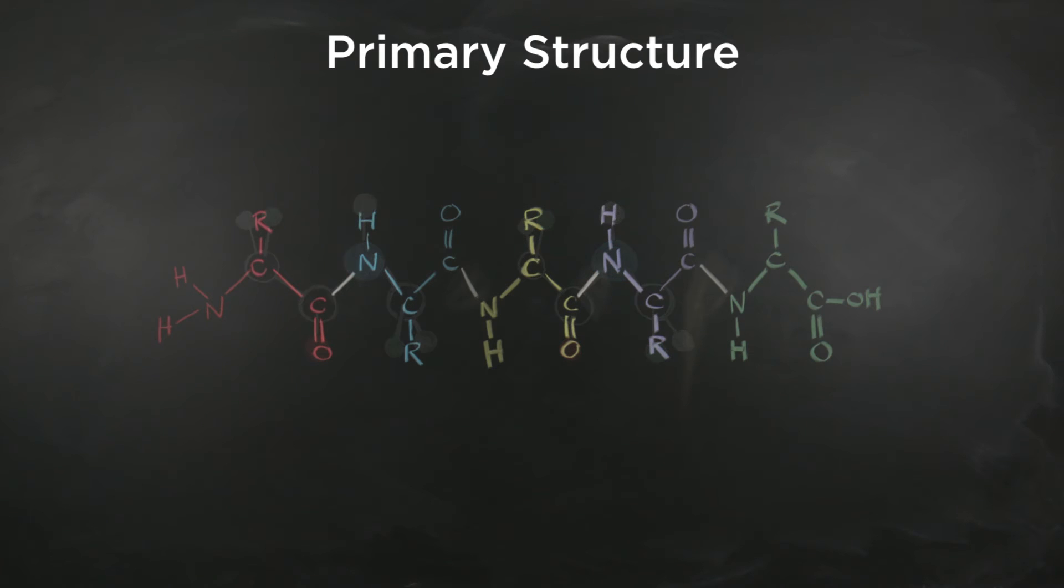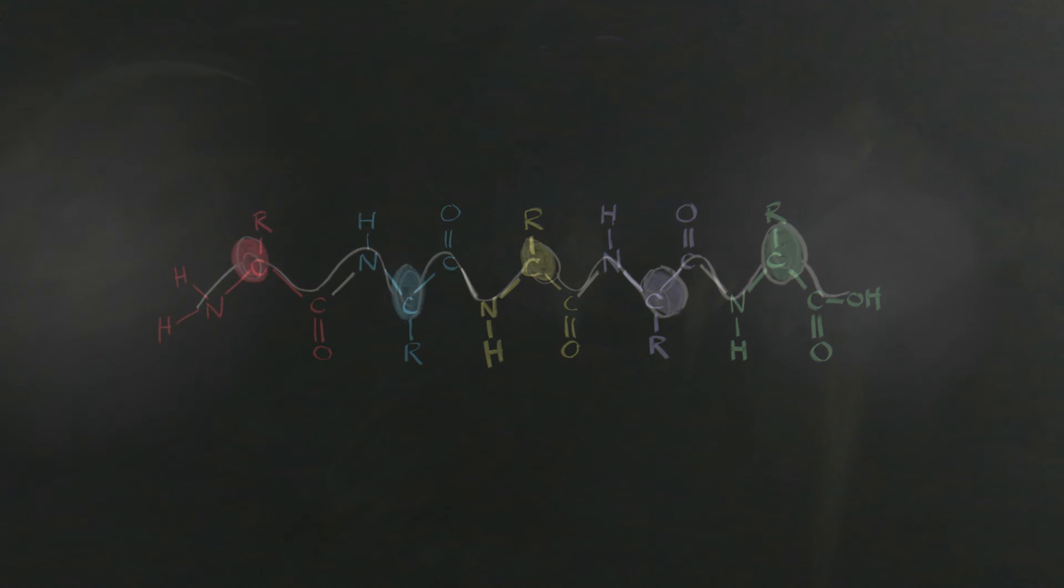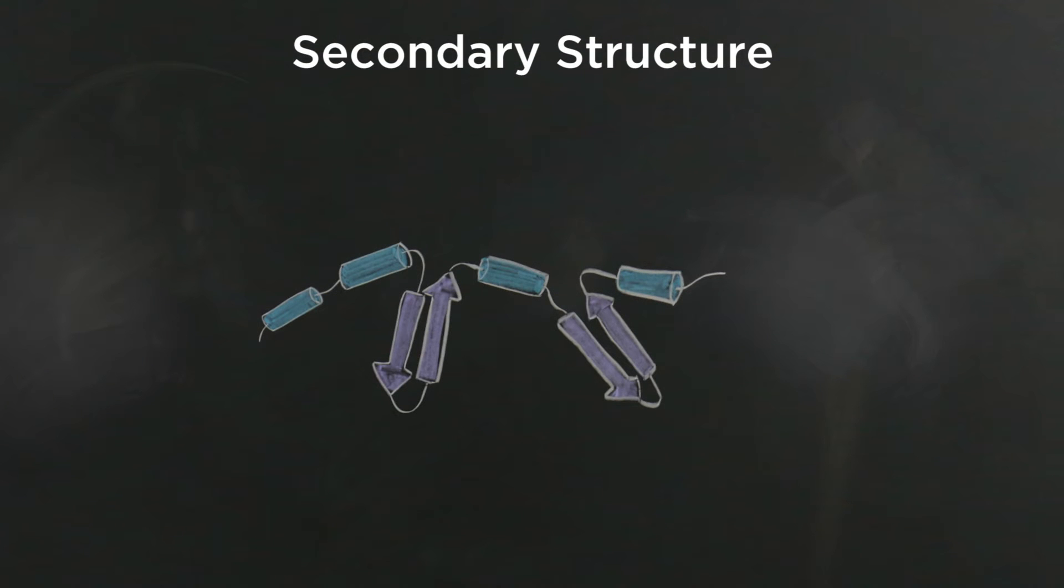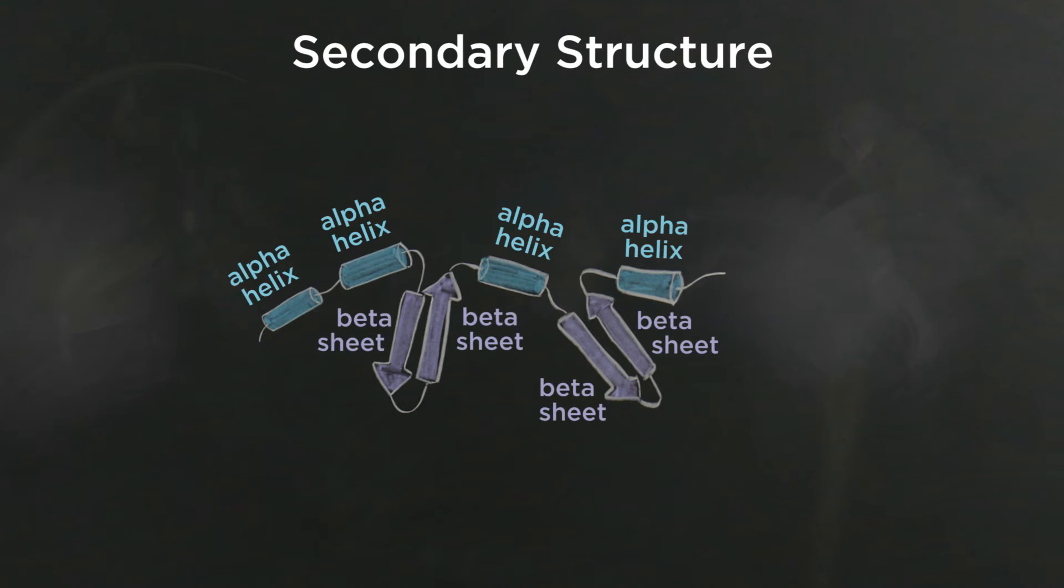A protein in its primary structure is also referred to as a polypeptide. Proteins however do not exist in this structure in the aqueous environment of the cell. The long strands of amino acid will fold upon itself into more complex secondary structures. Two common secondary structures are the alpha helices and the beta sheets.